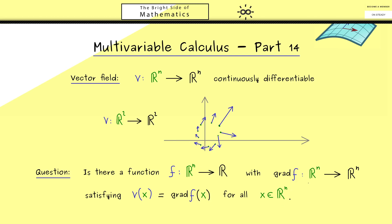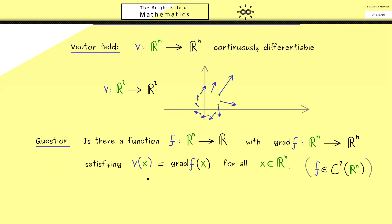But now you should see, this question only makes sense, if our function f is C^2. So it's 2 times continuously differentiable. So you see, this is the minimal thing we need. Moreover, in this case here, such a function f is called a potential function for the vector field V.